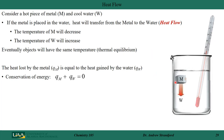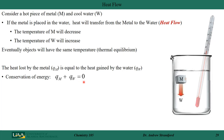We consider the metal as our system and the water as our surroundings. The heat lost by the metal is equal to the heat gained by the water. Because of the law of conservation of energy, the amount of heat lost by the metal plus the amount of heat gained by the water must equal zero, assuming no heat is gained or lost to anything else.